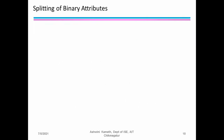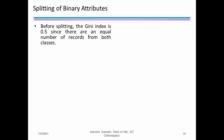Now let's discuss splitting of binary attributes. Before splitting, the Gini index is 0.5 since there are an equal number of records from both classes. Consider a parent node with 12 records: 6 belonging to class C0 and 6 to class C1. The Gini index will be 0.5 because of the equal distribution.